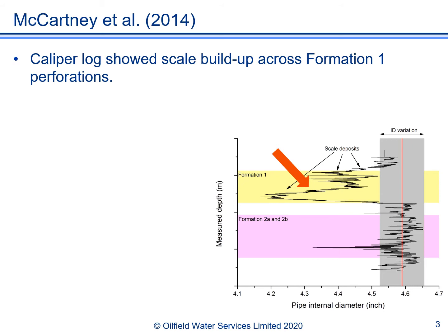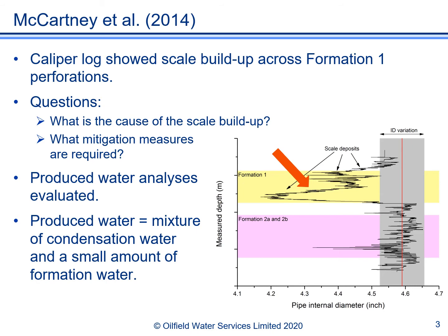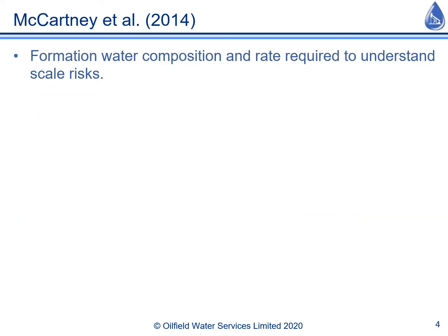This was a surprise to the asset because produced water samples from this well collected at the test separator were very low salinity and were thought to be benign and non-scaling. The asset wanted to better understand the cause of the scale build-up in the well and to determine what was required to mitigate scale. So the produced water analyses were evaluated, and this showed that the produced water was actually a mixture of condensation water and only a small amount of formation water. This explained why the produced water had such low salinity and why it appeared to be non-scaling.